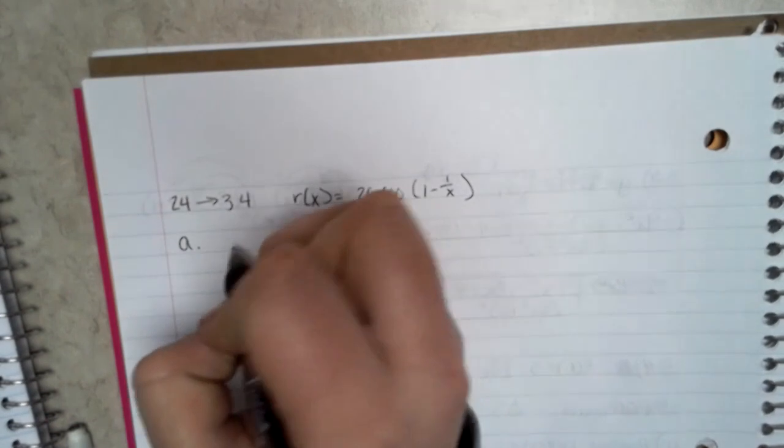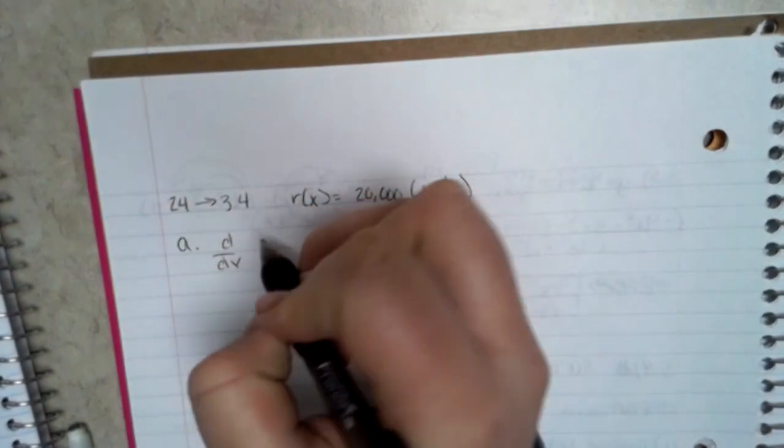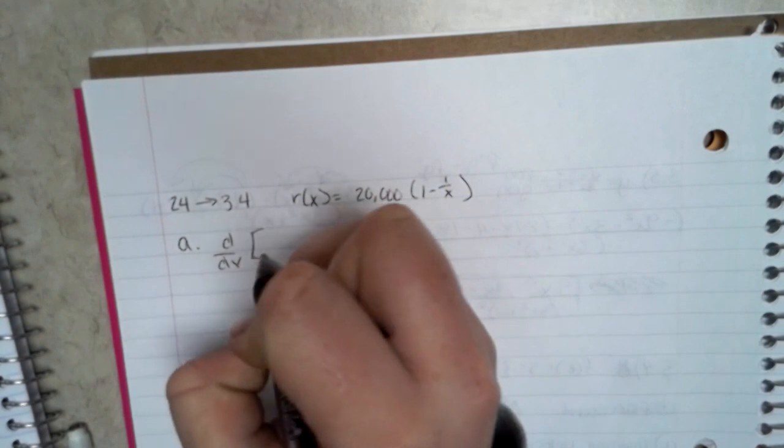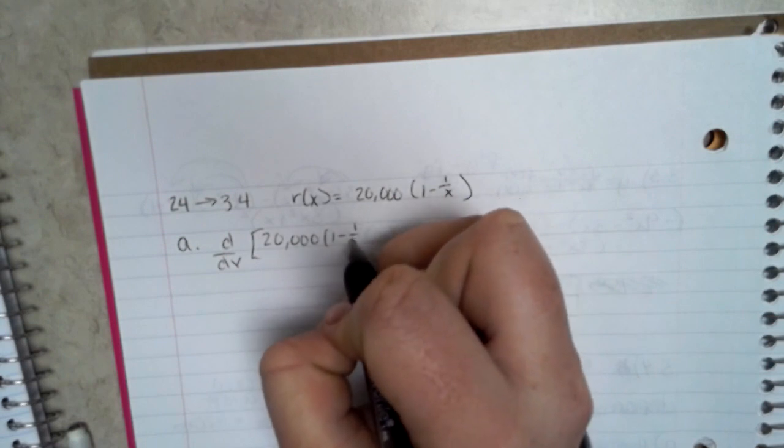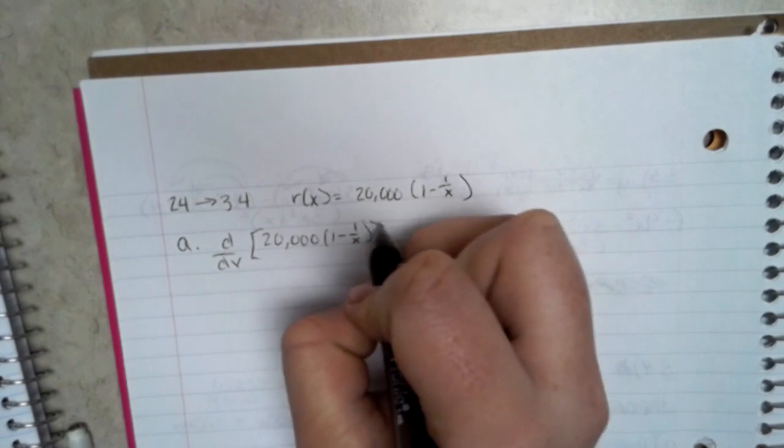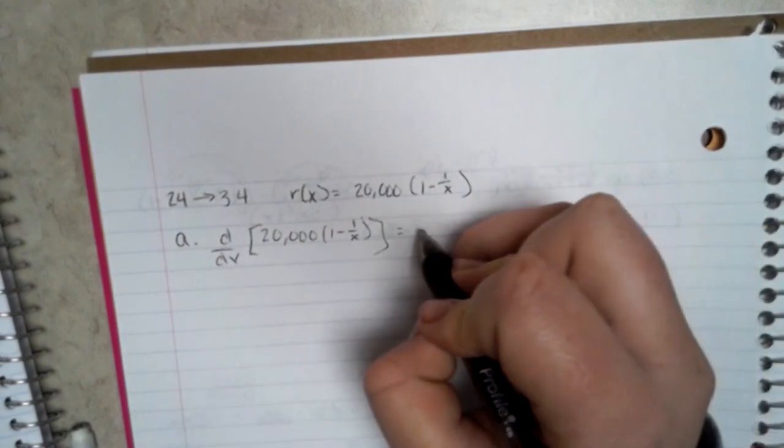Because this is a constant, your 20,000 stays as 20,000 when you take the derivative.